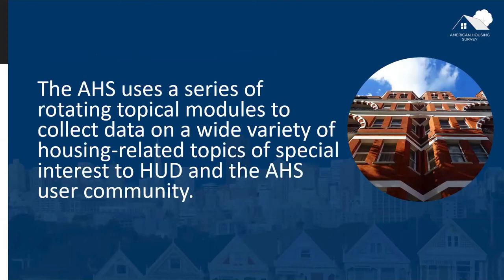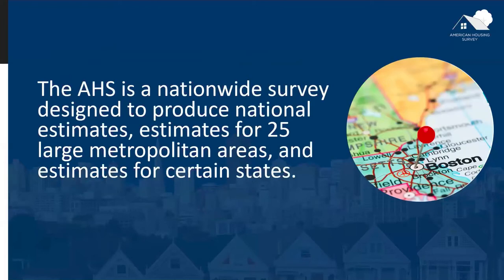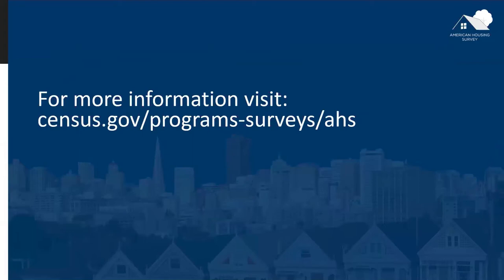In addition to the core topics, the American Housing Survey includes a series of rotating topical modules that collect data on a wide variety of housing-related topics of special interest to HUD and the American Housing Survey user community. These rotating modules provide unique insights on topics like health and safety hazards in the home, food insecurity, the use of housing counseling services, the presence of arts and cultural opportunities in the community, neighborhood characteristics, delinquent rent or mortgage payments, and emergency and disaster preparedness, among others. The American Housing Survey is a nationwide survey designed to produce national estimates, estimates for 25 large metropolitan areas, and estimates for certain states. More information can be found online at census.gov/programs-surveys/ahs.